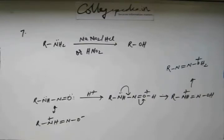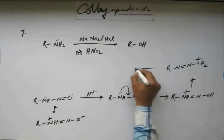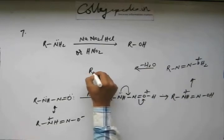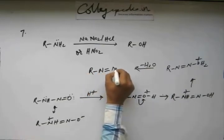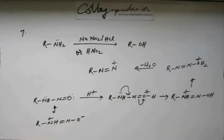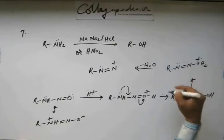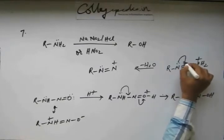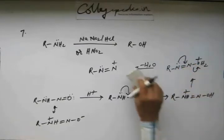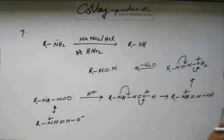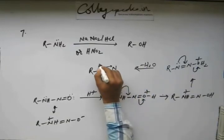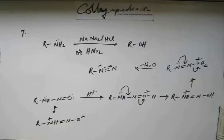Now OH2 plus is a good leaving group because water is thermodynamically very stable solvent. So water is going to come out. If water comes out this nitrogen gains a plus charge. And this nitrogen has a lone pair. So actually the whole process will go simultaneously. As water comes out this lone pair will come in to form a bond.